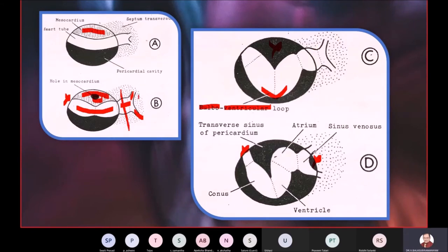Now, you see, the same sinus venosus is being pulled inwards into the pericardial cavity. Similarly, at the other end, the arterial end is being brought backwards, the venous end is brought forwards. Got it?